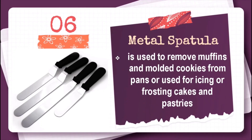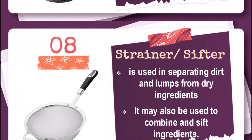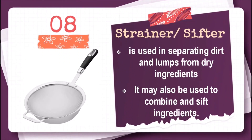Metal spatula is used to remove muffins and molded cookies from pans, or used for icing or frosting cakes and pastries. Mortar and pestle are used to powder, pound, or crush various baking ingredients. Strainer or sifter is used in separating dirt and lumps from dry ingredients, and may also be used to combine and sift ingredients.